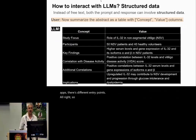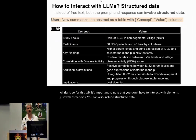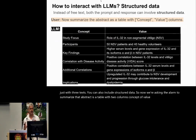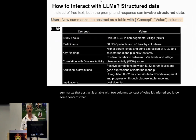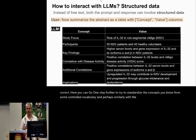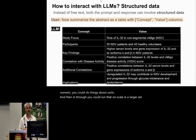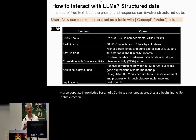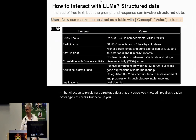It's important to note that you don't have to interact with LLMs just with free text — you can also include structured data. We're now asking the LLM to summarize that abstract as a table with two columns: concept and value. It inferred some concepts it identified in this text and provided values from that abstract. It's all correct here. You could go one step further to standardize the concepts from a controlled vocabulary, and similarly with the values. In theory, you could run that at scale on a larger collection of literature and maybe populate a knowledge base.